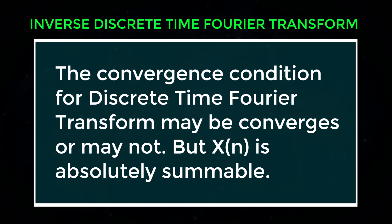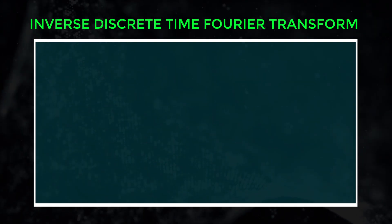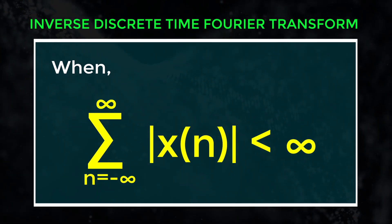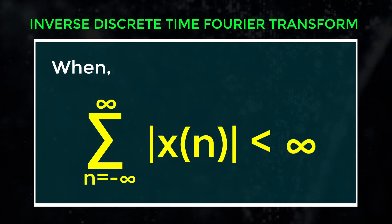The convergence condition for discrete time Fourier transform may converge or may not, but x(n) is absolutely summable when the sum from n equals minus infinity to infinity of the absolute value of x(n) is less than infinity.